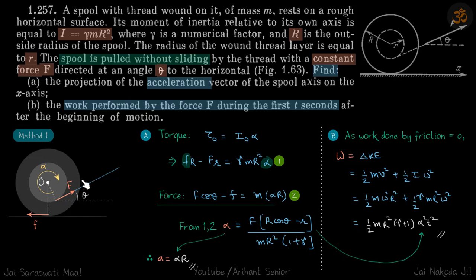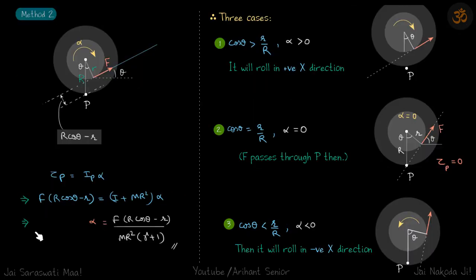That was Method 1, using two equations to find alpha. Now let's see a shorter method using only one equation — we write the torque about the contact point P, which eliminates the friction variable entirely.